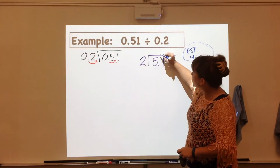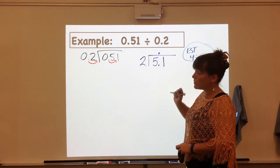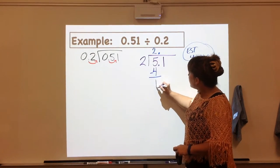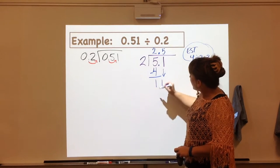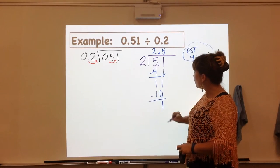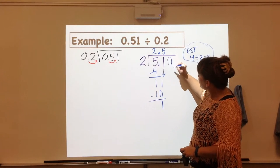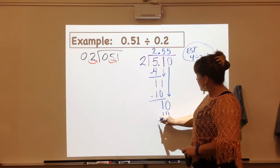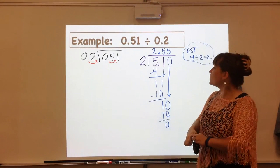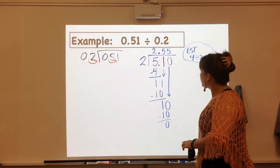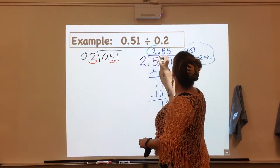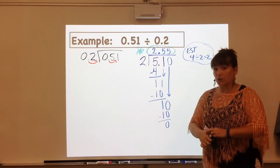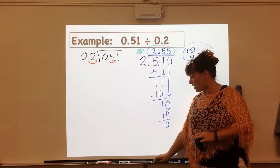We're going to put the decimal point straight up into the problem. That's first and now we can do 2 times 2 is 4 and then we're going to bring down the 1 and 2 times 5 is 10 giving us another 1 and now we're going to annex that zero, bring it on down and we need another 5 and we have a lovely zero at the bottom. Leaving our answer, the answer is 2.55 which is coinciding with our estimate.